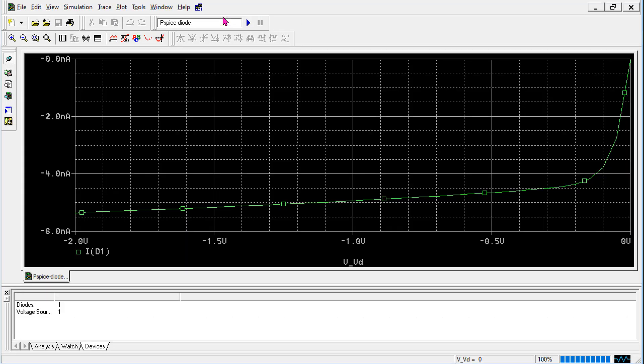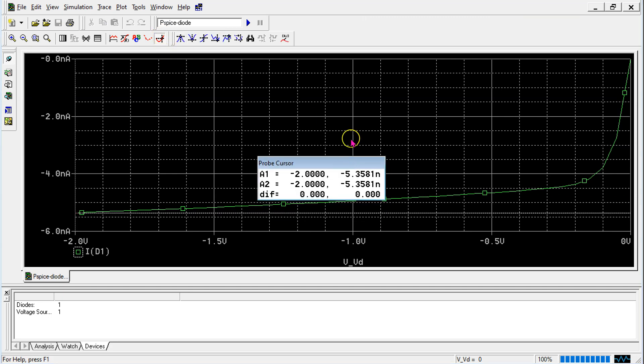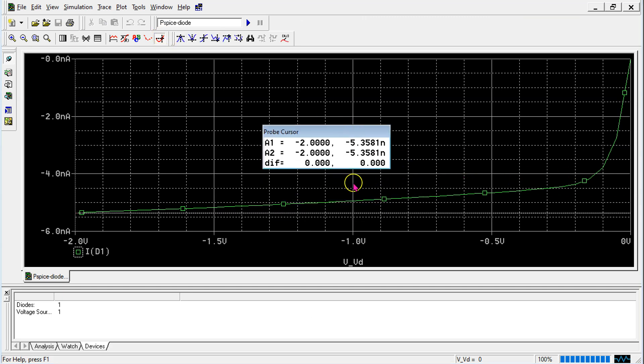When we simulate, we obtain the diode characteristics in the OFF region. We can see that in this case, the reverse saturation current is around 5 nanoamps, which is half that obtained in LTSpice.